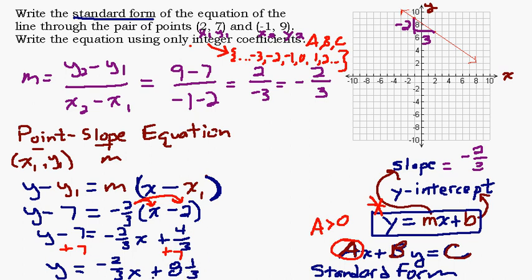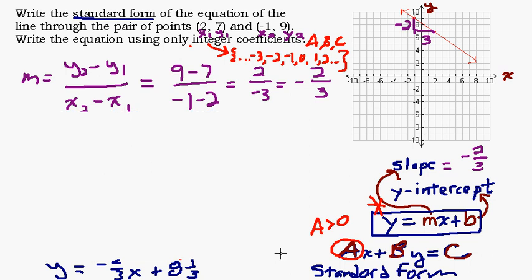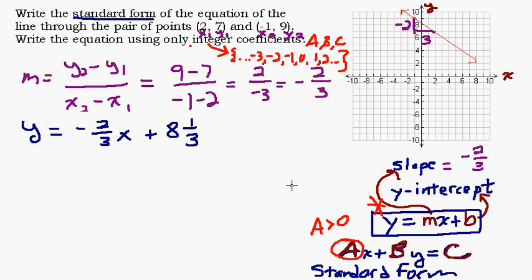So that makes our y-intercept 8 and 1/3, which matches with our graph right here. So that's good. Let's erase this stuff so we have a place to work on our standard form here. And I'm going to rewrite this equation that we have, our slope-intercept form of our equation. I'll write it up here: y = -2/3x + 8 and 1/3.